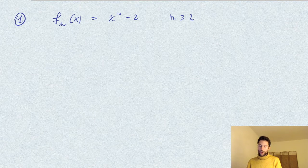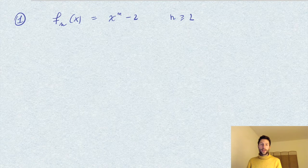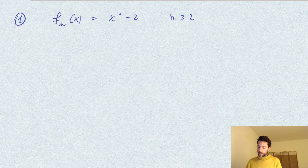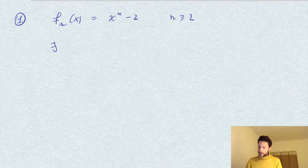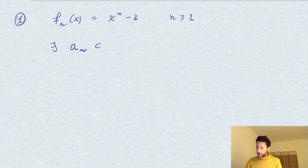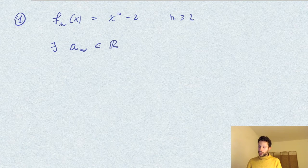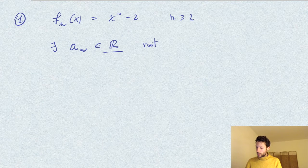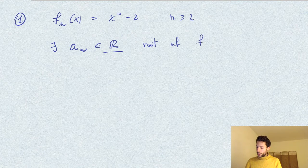And we know that there exists the nth root of 2 in R, in the reals. So there exists for each n, we pick a_n to be a real root, so in R, a root of f_n.